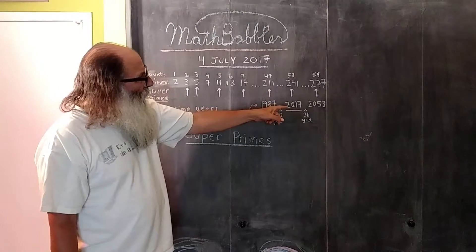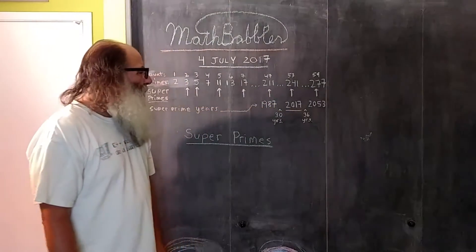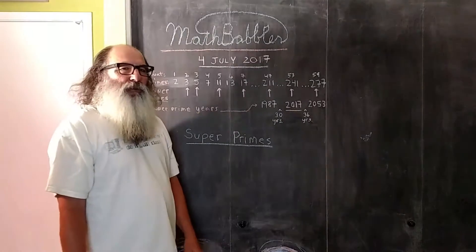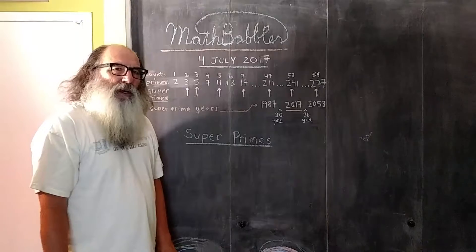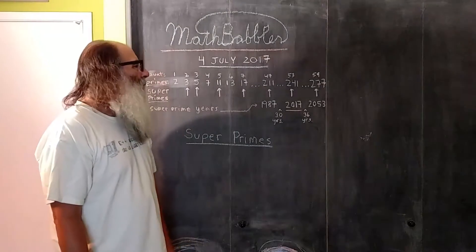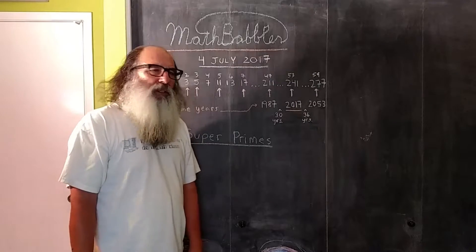241 equates with the year 2017. So this year we are super prime aged. The last time the United States was super prime aged was in 1987, 30 years ago.